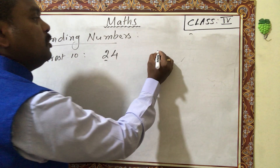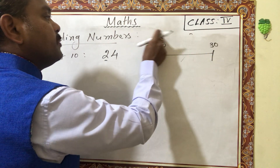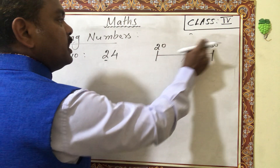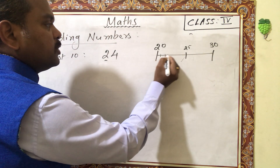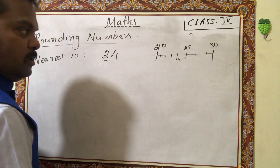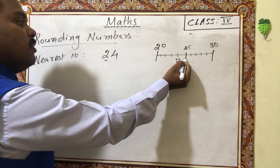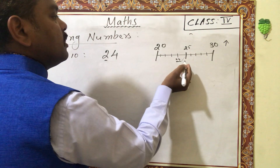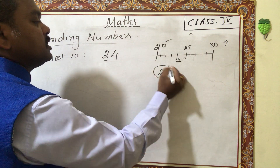Our question is 24. Numbers from 21 to 24 are below the midpoint 25. Since 24 is less than half, we round down to 20. The rule is: if the number is half or more than half, round up to the larger number. If it is less than half, round down to the smaller number. So 20 is the answer for 24.